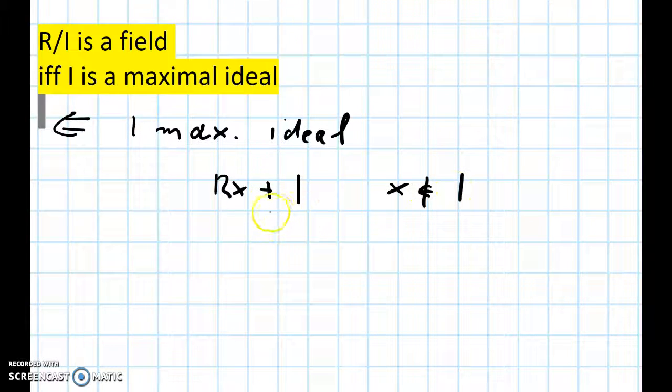This is still an ideal and it contains I because you can write 0 times x plus I, which is the same as I. So Rx plus I contains I, and we suppose that I is a maximal ideal, and this means that the only ideal that is allowed to contain I is R itself. So Rx plus I is the same as R.